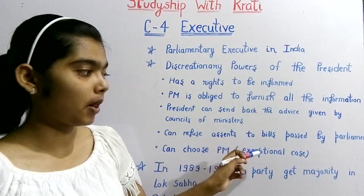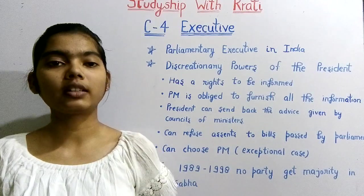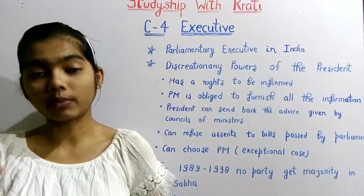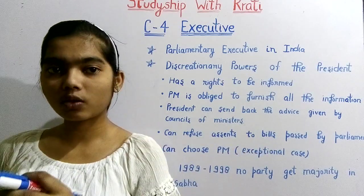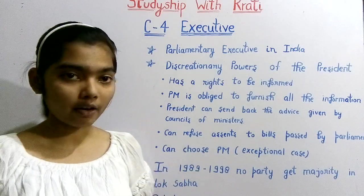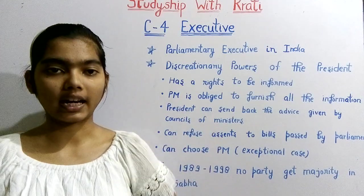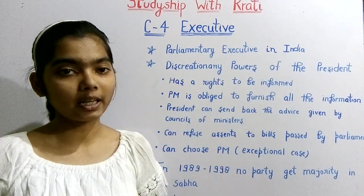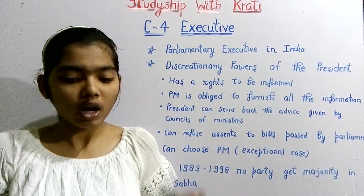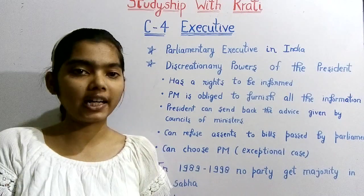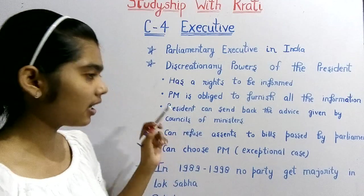The President can refuse assent to a bill passed by Parliament. When Parliament passes a bill and sends it to the President, the President has the power to keep it — meaning he can hold onto it and delay deciding whether it should become law or not. This is considered an unlimited power for the President, because there is no fixed time limit for the President to act on a bill sent by Parliament.